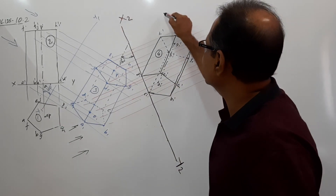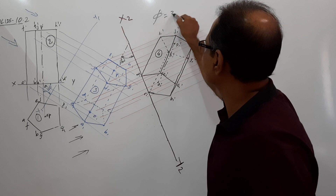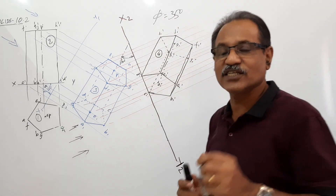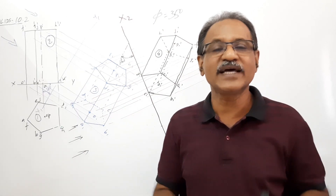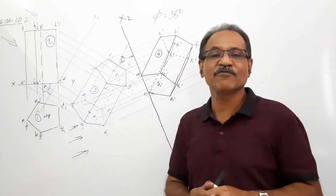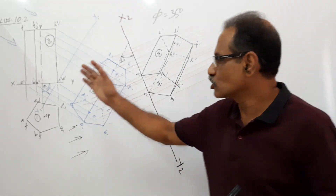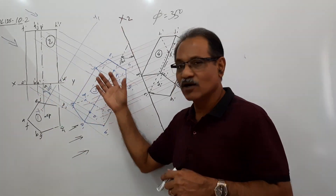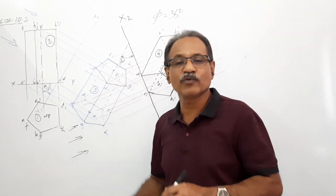35 degrees is phi (φ). Phi equals 35 degrees — that is the inclination of the axis to VP. Phi is given as 35 degrees. What do you have to do? Draw the simple position plan and elevation, draw the auxiliary plan, and then draw X2Y2.